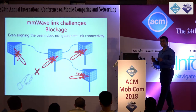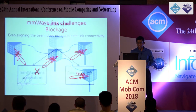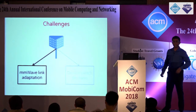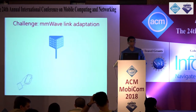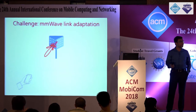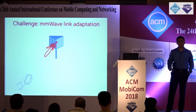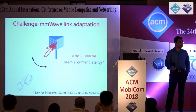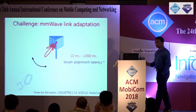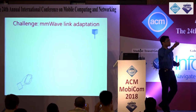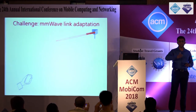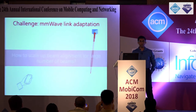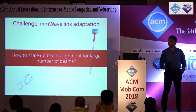First, let's look at the link adaptation challenge. Millimeter wave devices must use beamforming to create a connection. Recovering and aligning the beam takes a long time — existing measurements show it takes 10 to even a thousand milliseconds for a link to recover during mobility, even for 64 beams. When the base station is far away, you need narrower beams for longer range, but narrower beams mean more search. Imagine scaling from 64 beams up to 1024 beams. How do you still achieve sub-millisecond critical latency?